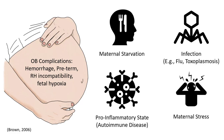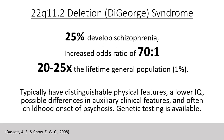It is estimated that 25% of people carrying the 22q11.2 deletion develop schizophrenia, an increased odds ratio of 70 to 1, and 20 to 25 times the lifetime general population risk of around 1%. Individuals with this form of schizophrenia typically have distinguishable physical features, a lower IQ, possible differences in auxiliary clinical features, and often childhood onset of schizophrenia. Genetic testing for 22q11.2 is available.